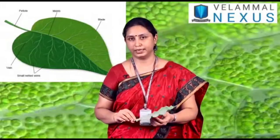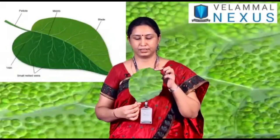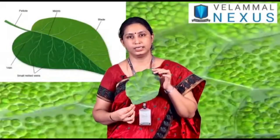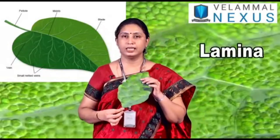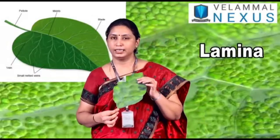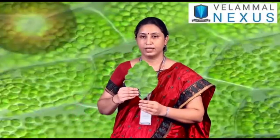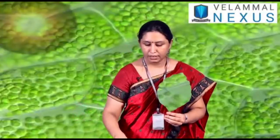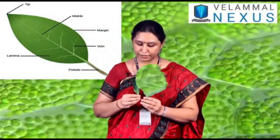First, we will see the leaf blade. The flat part of the leaf is called the leaf blade. The leaf blade is also called lamina. Some leaves have a broad leaf blade and some leaves have a narrow leaf blade.